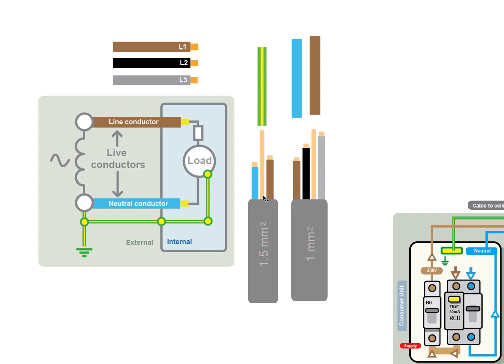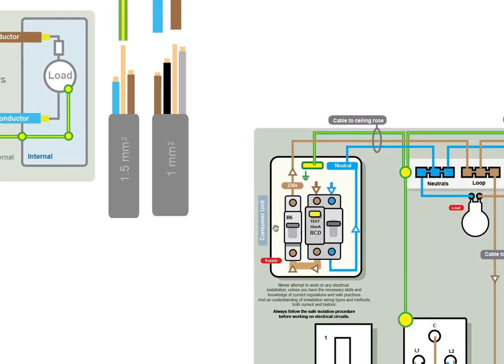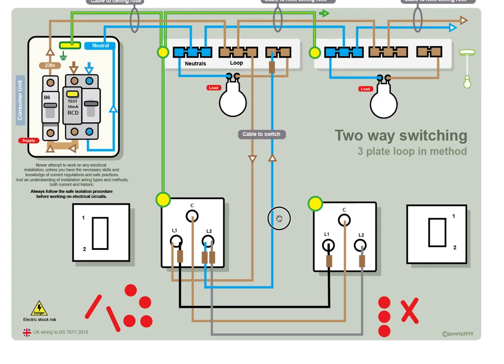And that can only be used as a protective conductor. You can't use that for anything else. However, the other conductors can be utilized for different purposes, and that is sleeved with either brown or blue to indicate what its purpose is. So go back to the main page.